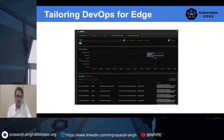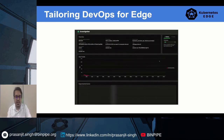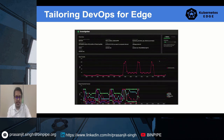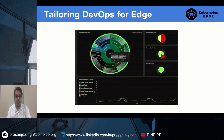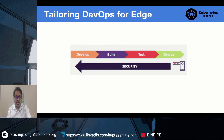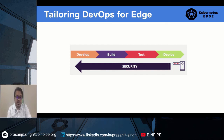Finally, shift left for your security gates. In the simplest terms, shift-left security means moving security to the earliest possible point in the development process — in this case, incorporated into the pipeline even before the container is baked. This, along with other peripheral security layers, will make edge applications robust.